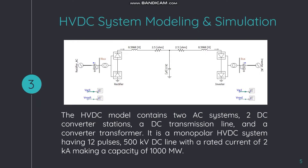This is the HVDC system model on PSCAD, obtained from an example file. The CIGRE model is a benchmark model available on PSCAD. This model contains two AC systems, two DC converter stations, a DC transmission line, and converter transformers. It is a monopolar HVDC system having 12 pulses, a 500 kV DC line with a rated current of 2 kilo-amps, making a capacity of 1000 megawatts, all shown in this figure.